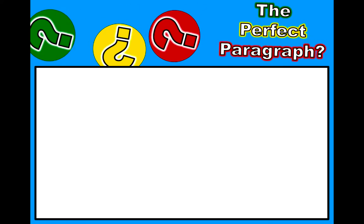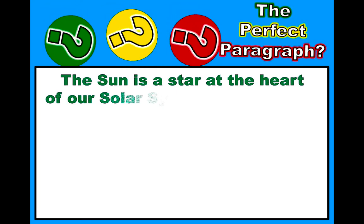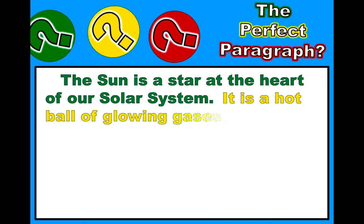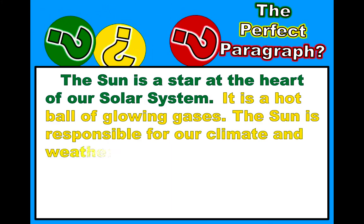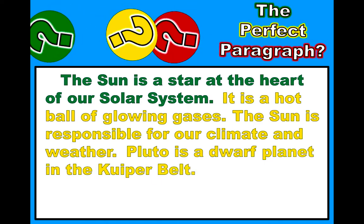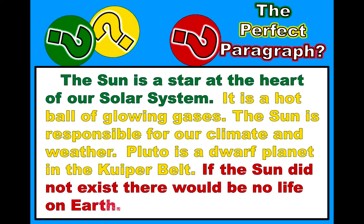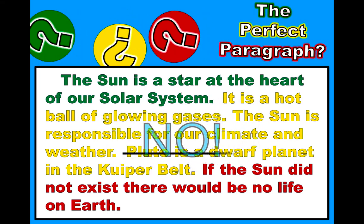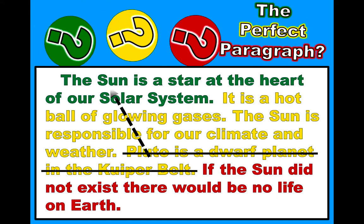What do you think — is this a perfect paragraph? The sun is a star at the heart of our solar system. It is a hot ball of glowing gases. The sun is responsible for our climate and weather. Pluto is a dwarf planet in the Kuiper belt. If the sun did not exist, there would be no life on Earth. Is this a perfect paragraph? No — because 'Pluto is a dwarf planet in the Kuiper belt' doesn't have anything to do with the topic sentence about the sun.